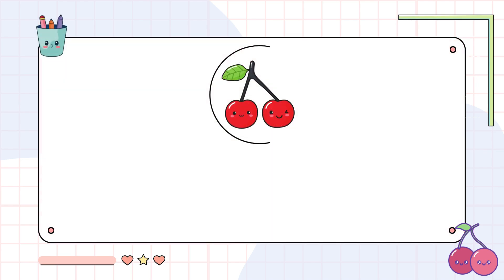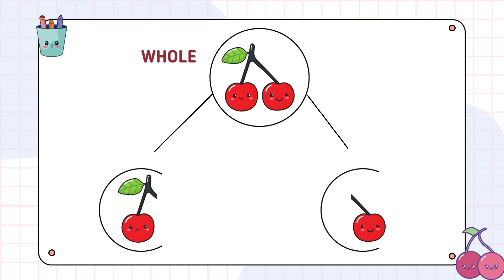So, what is a part-whole cherry model? Picture a group of objects, like cherries. The whole is the entire group, and it's represented by a big circle at the top. Below it, we have smaller circles called the parts. Each part represents a smaller portion of the whole.